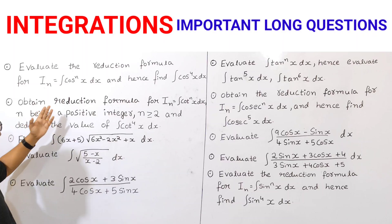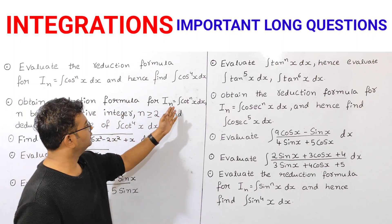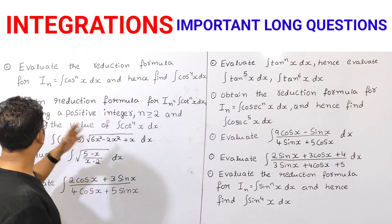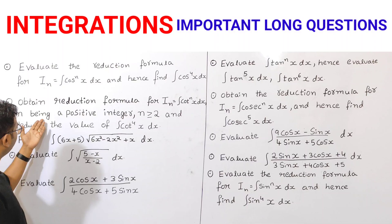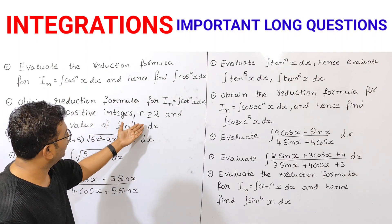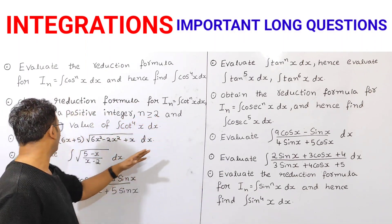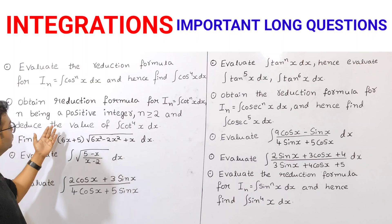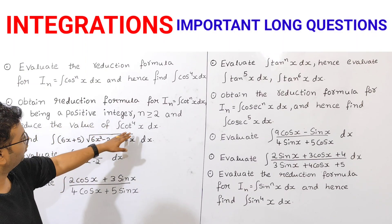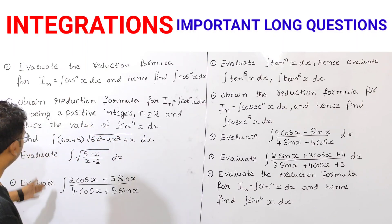Next, obtain the reduction formula for I(n) = integration of cos to the power of n of x dx, where n is a positive integer and n is greater than or equal to 2, and reduce the value of integration of cos to the power of 4 x dx.